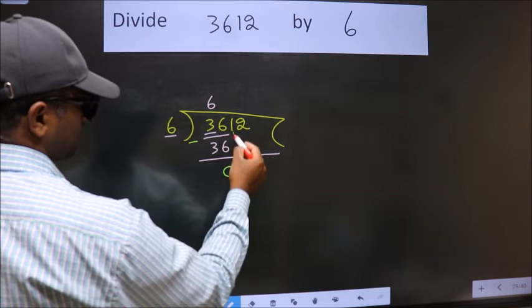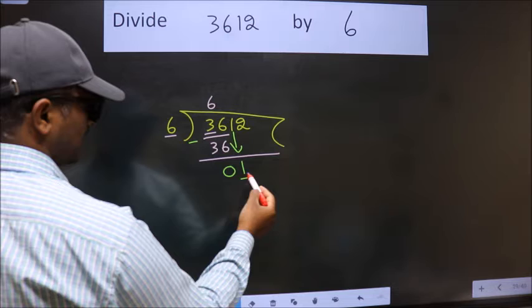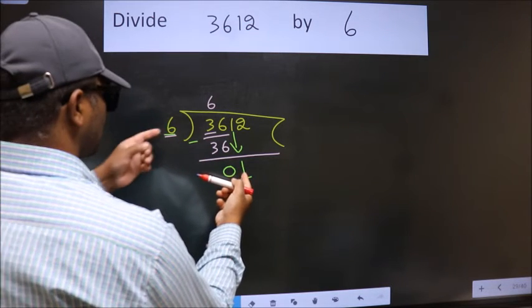After this, bring down the beside number. So, 1 down. Now here we have 1. Here 6. 1 is smaller than 6.